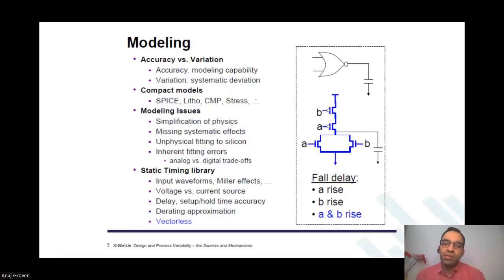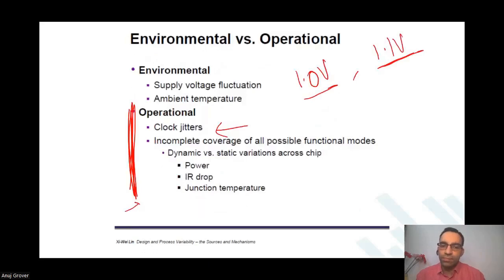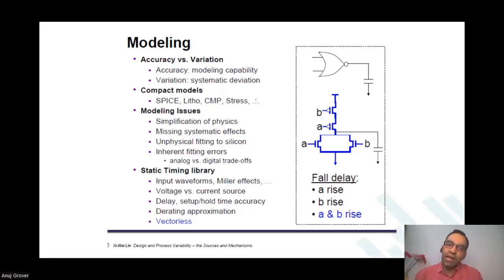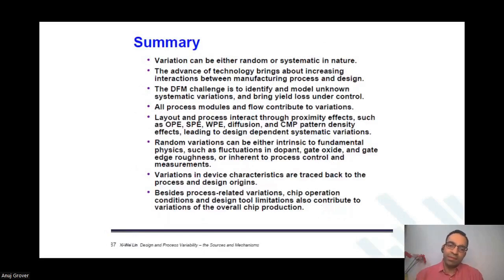The operational variations are something that you need to leave margins for. Some of the variations can be modeled, some cannot be modeled. Whatever it is, you have to operate your design accordingly. You want to model as much as possible. At times you model the exact variation; at times you model the variation in a statistical manner, and then you will need to run Monte Carlo simulations to verify your circuit. There are different kinds of variations, and there are ways to handle them. You can make structurally good layouts, you can make matched layouts, so that at least systematic variations are minimized.